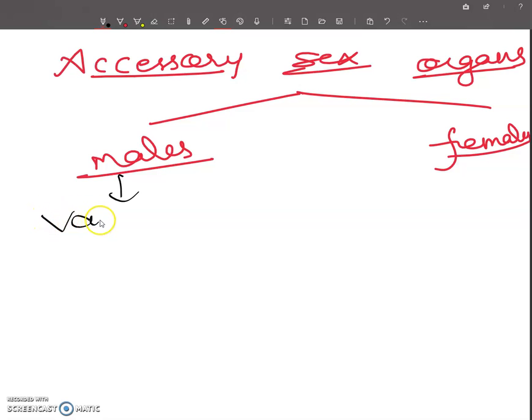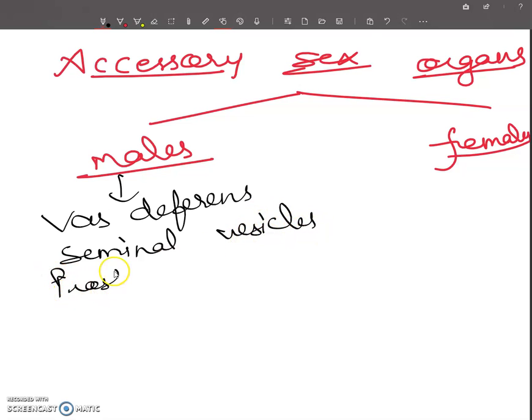The male reproductive system can take vas deferens, seminal vesicles, and prostate glands, penis. These are the accessory sex organs.